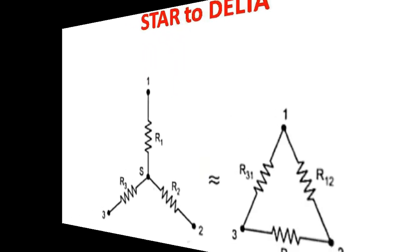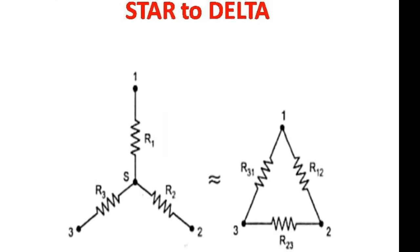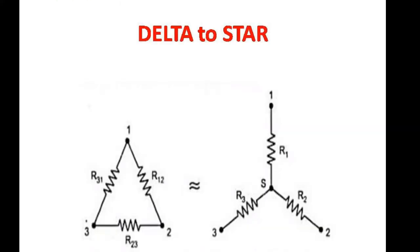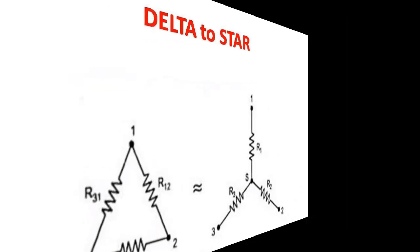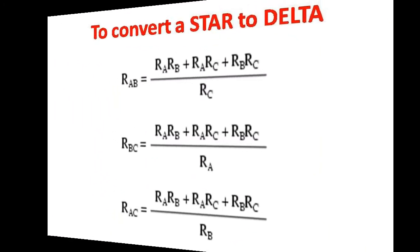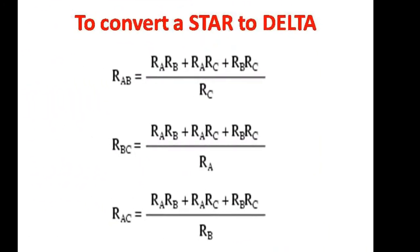We shall see how a star can be converted to a delta connection and how a delta connection can be converted into a star connection. We have certain formulas to convert star to delta and delta to star.